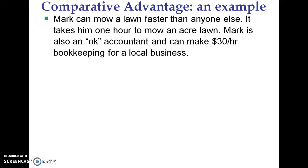Here's an example that will clarify comparative and absolute advantage. Mark can mow a lawn faster than anyone else — it takes him one hour to mow an acre lawn. He can also work as an accountant; he's an okay accountant and can make $30 an hour as a local bookkeeper.